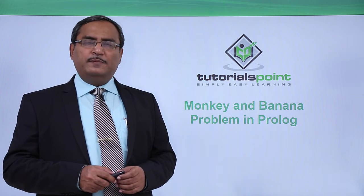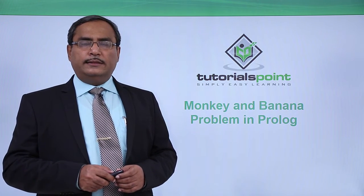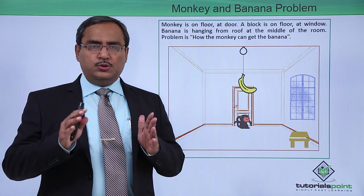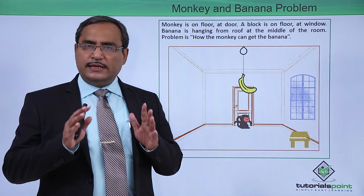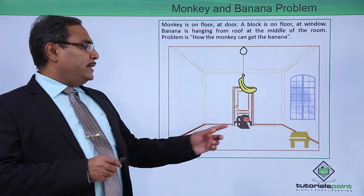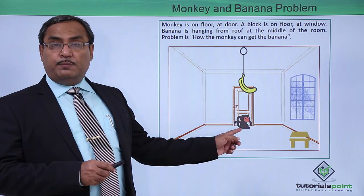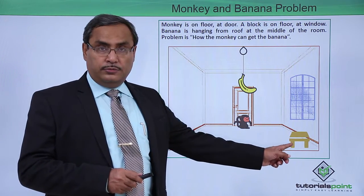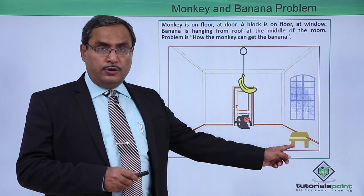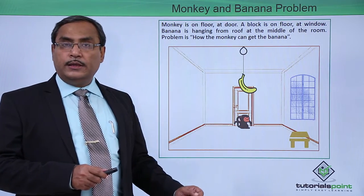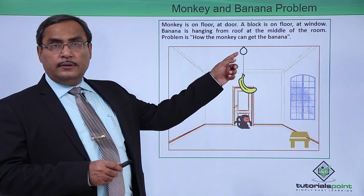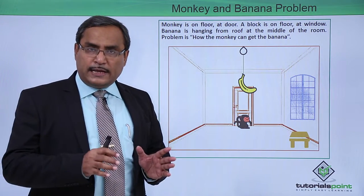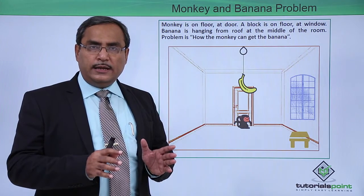We are going to discuss a very famous and classical problem, the monkey-banana problem. We shall show you the initial scenario of this problem. There is a monkey on the floor at the door. There is a block which is on the floor near one window. From the ceiling, at the middle of the room, a banana is hanging. The problem is: how can the monkey get the banana?